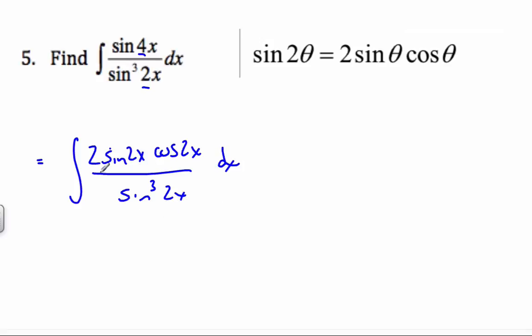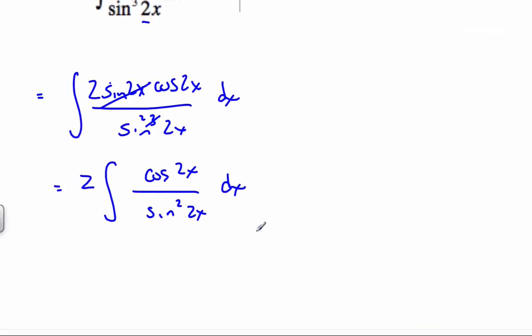Sin 2x cos 2x over sin³(2x) dx. Well, when I look at this, that cancels with that. I'll make a squared. I'll pull the 2 out altogether, and so it's 2 cos 2x over sin²(2x) dx.